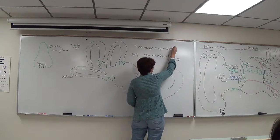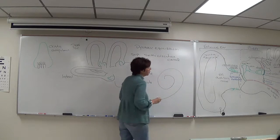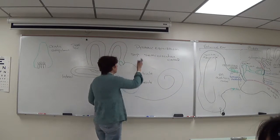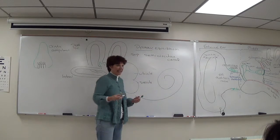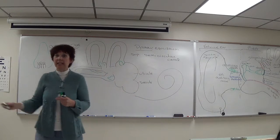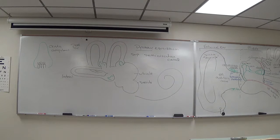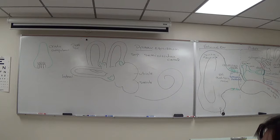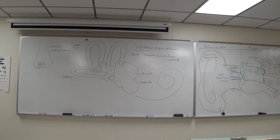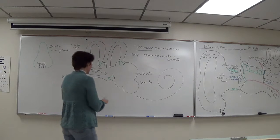So I want you to associate the semicircular canals with what is known as dynamic equilibrium. Both of the semicircular canals and the utricle saccule are going to be equilibrium or balance, but dynamic means mobile, moving. So spinning, you're ice skating, you're running, whatever, you're turning and moving is what dynamic equilibrium refers to.